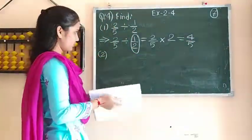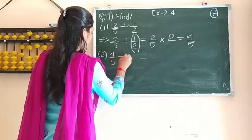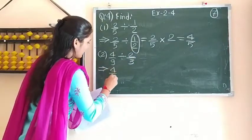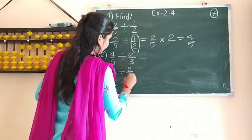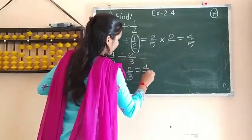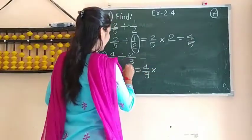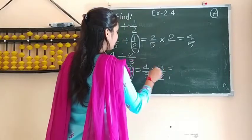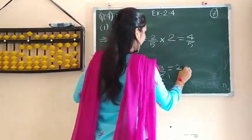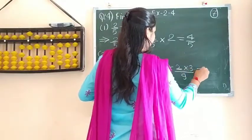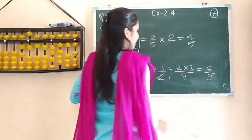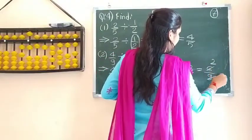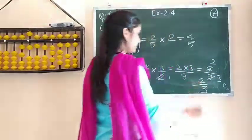Second: 4 upon 9 divided by 2 upon 3. Write it as it is, then replace the division sign with multiplication and make the reciprocal of 2 by 3, which becomes 3 by 2. So 4 by 9 multiplied by 3 by 2 gives 2 into 3 upon 9, which is 6 upon 9. You can reduce it since numerator and denominator are both divisible by 3, giving the answer 2 upon 3.